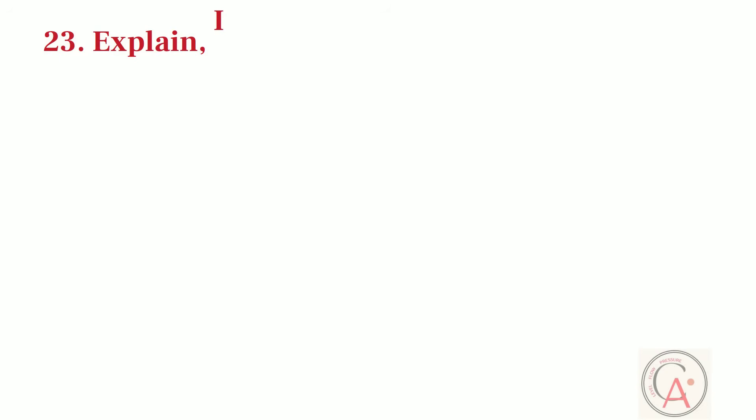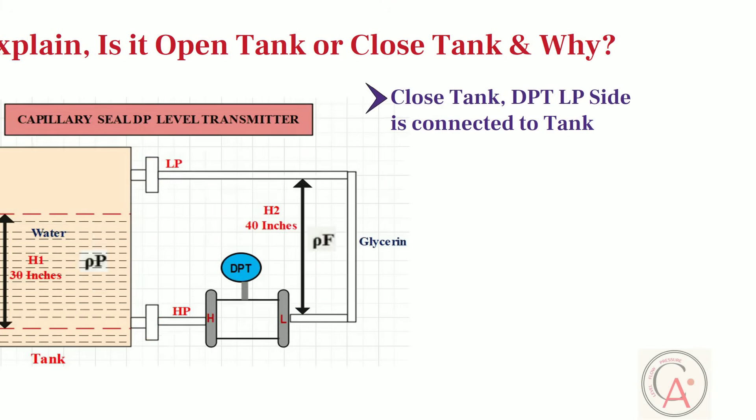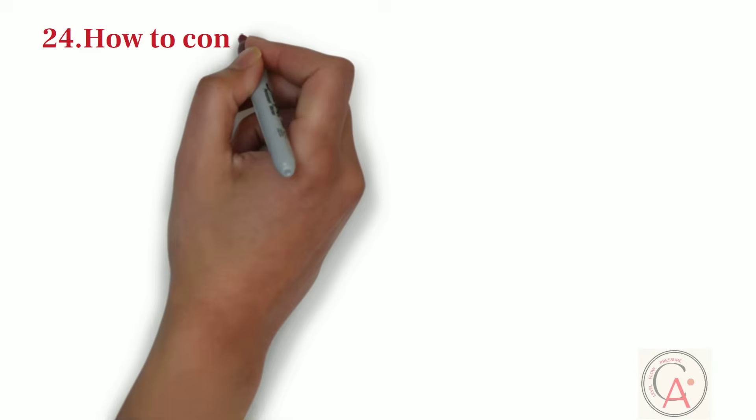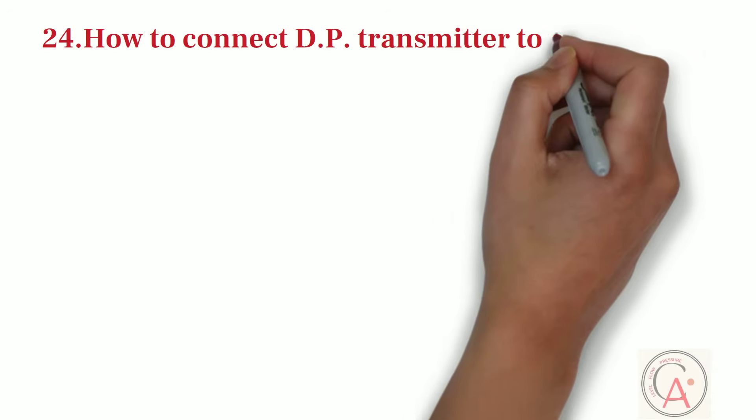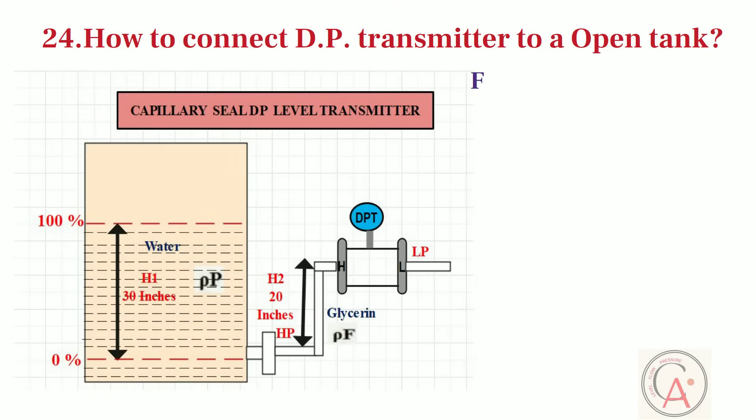Twenty-third number question is, please identify, is it open tank or close tank, and why? It is a close tank. Because DPT's low-pressure side is connected to top part of vessel. If low-port side of DPT is vented to atmosphere, then it is known as open tank. Next question is, how to connect DP transmitter to open tank? For open tank, low-port side of DPT is vented to atmosphere.